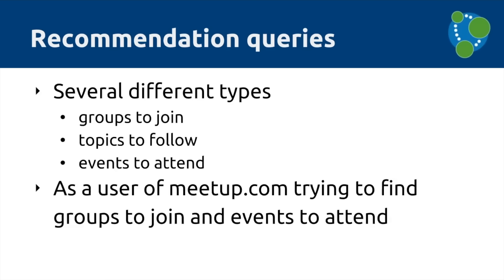There are three main areas we can make recommendations for: potential groups you can join (for example, there's a Neo4j user group in lots of different cities), topics you could follow — people can express interest in topics like VFJ, Java, or NoSQL — and finally events that get hosted. In London there are often six or seven every day, and you have to work out which one to attend. Across the whole talk we'll be looking from the perspective of a user of Meetup who wants to go to an event, rather than from the organizer's perspective.